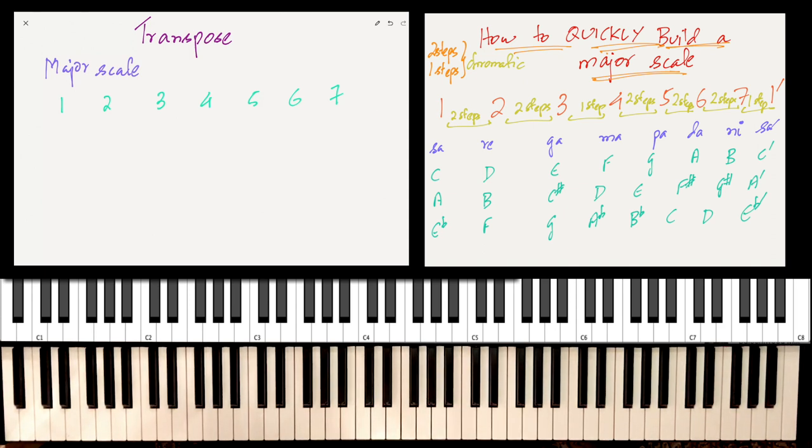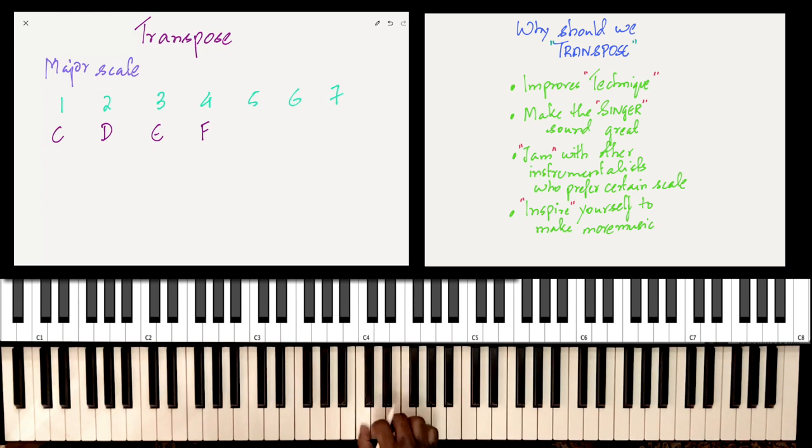And then what you're going to do is write down maybe a scale you already know. So if you perhaps know the C major scale, you could write down the C major scale - all the natural notes, right? C, D, E, F, G, A, B. That's pretty much it. If you want, you could add the high C.